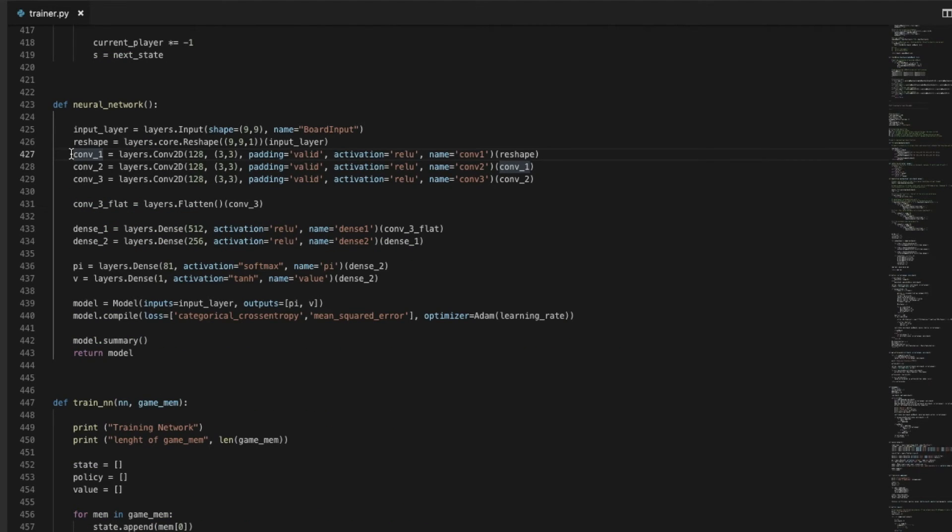And then here we have the neural network itself. So it has three convolutional layers, followed by two dense layers, and then the policy and value outputs. So the loss function for the value output is mean squared error, and for the policy output it's categorical cross-entropy. And then as the optimizer, I chose to use Adam.